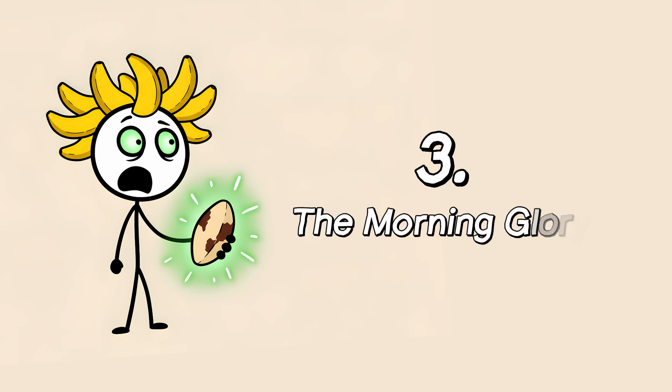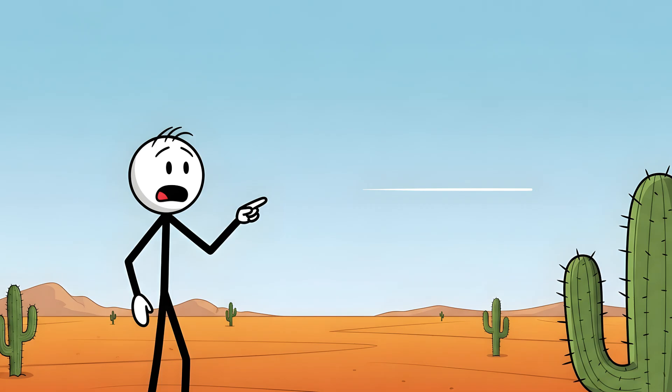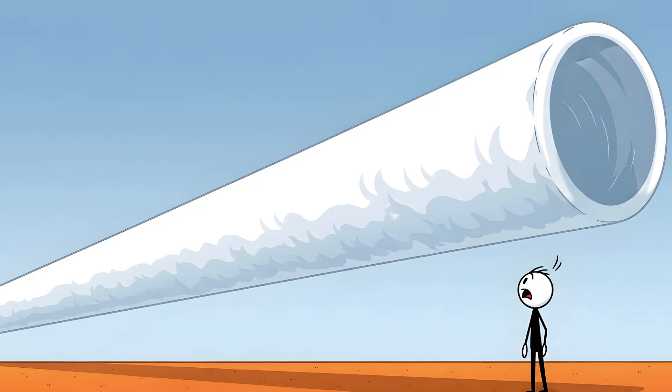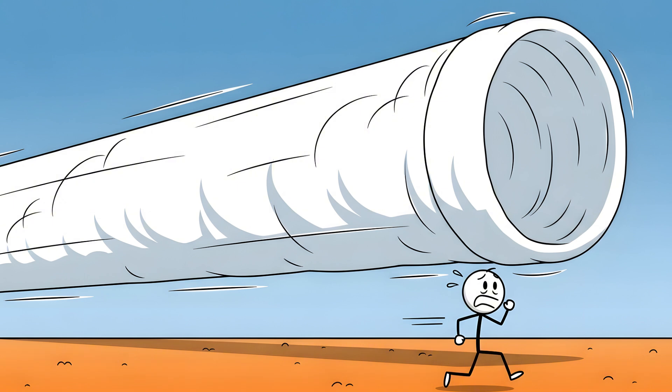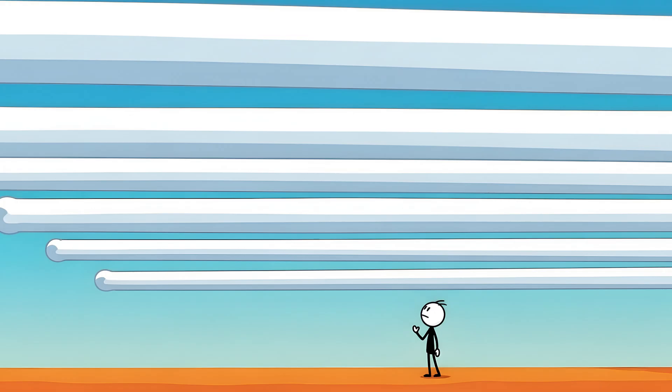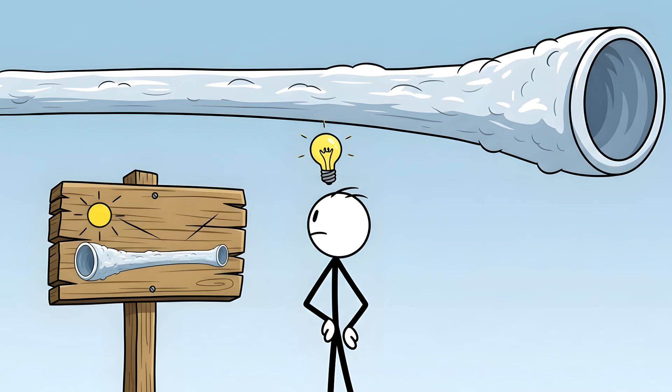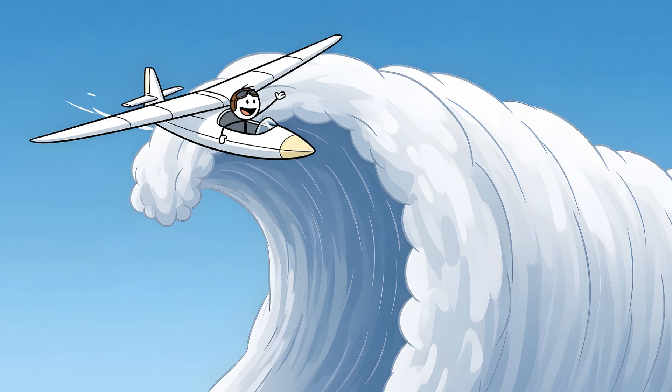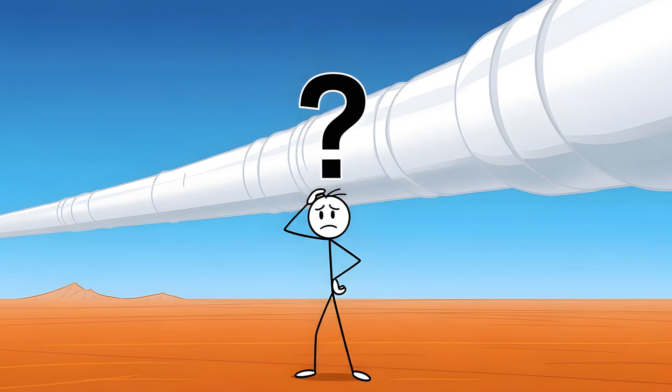Number three, the morning glory. Imagine waking up in the Australian outback. You look to the horizon and see something that doesn't belong. It's a cloud, but it's shaped like a massive, perfectly formed tube, stretching from one end of the horizon to the other. And it's not sitting still. It's rolling towards you, like a colossal atmospheric steamroller, a horizontal tornado. Sometimes there's one. Sometimes there are up to ten of them, rolling in eerie parallel formation. This is a morning glory cloud, one of the rarest and most spectacular meteorological phenomena on Earth. They are so predictable in one specific part of northern Australia, the Gulf of Carpentaria, that pilots and thrill-seeking glider pilots actually make appointments to go surf them. So what is this thing?